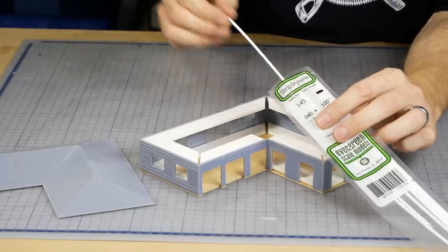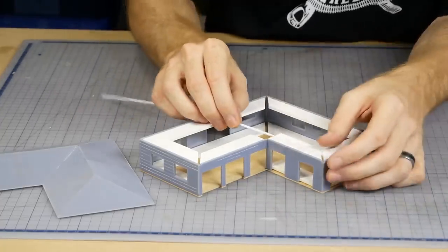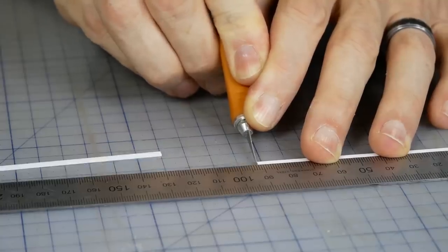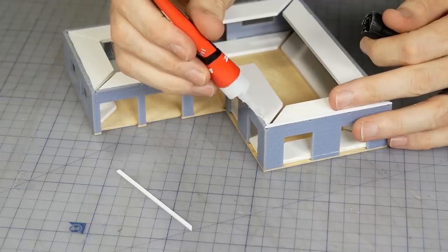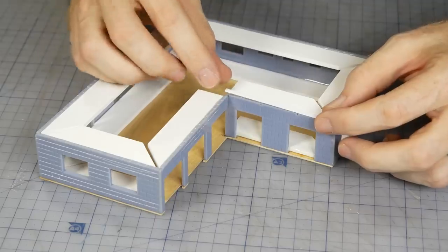After a quick test fit, I found the roof set just a touch too low on the bricks, so a styrene spacer was added to get the roof sitting at the height I was after. A bead of super glue was used to glue these down.